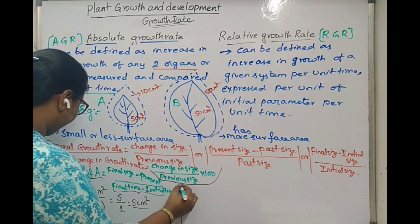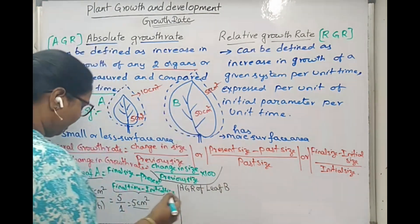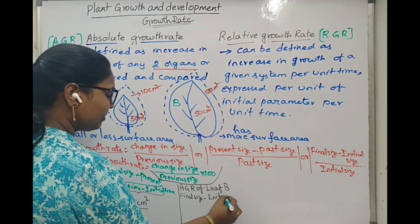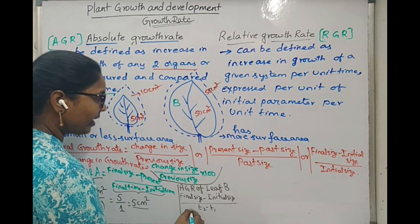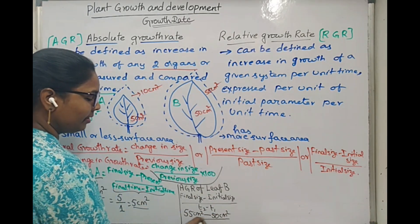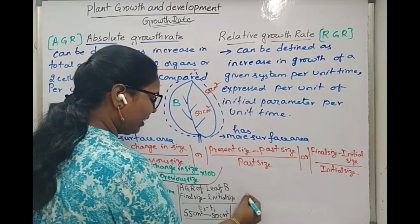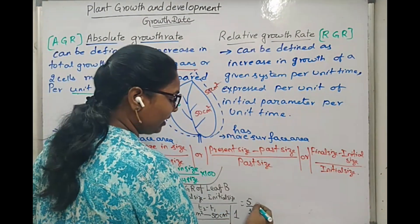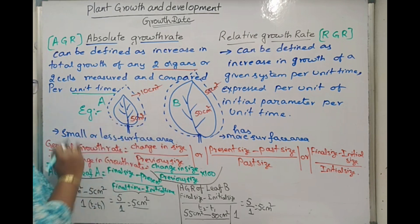Then what about leaf B? The absolute growth rate of leaf B is calculated the same way: final size minus initial size divided by T2 minus T1. That is 55 cm² minus 50 cm², divided by 1. That gives 5 divided by 1, which again equals 5 cm². So the absolute growth rate of both leaves is the same — 5 cm².